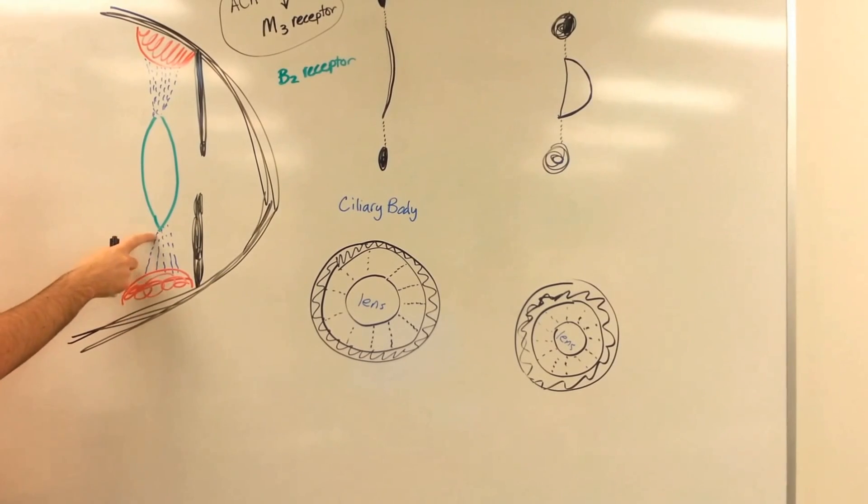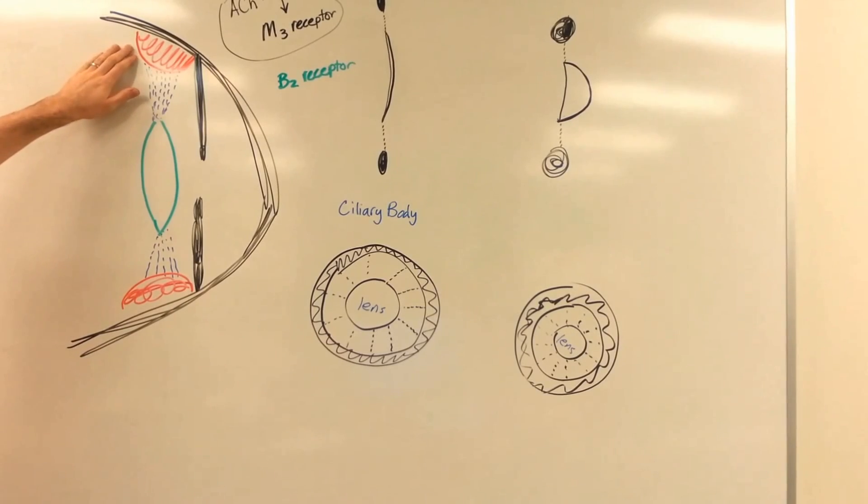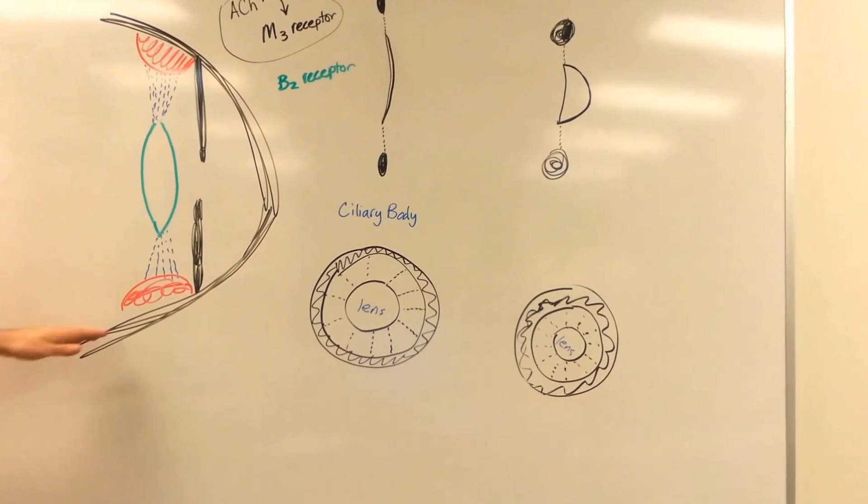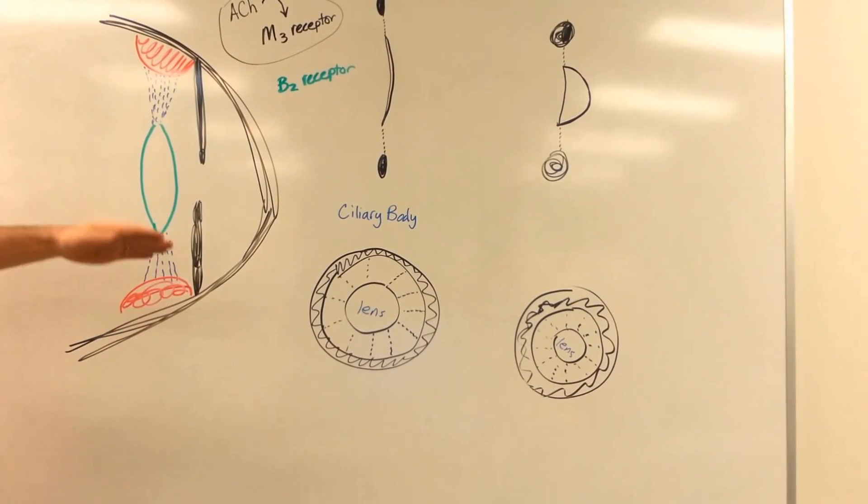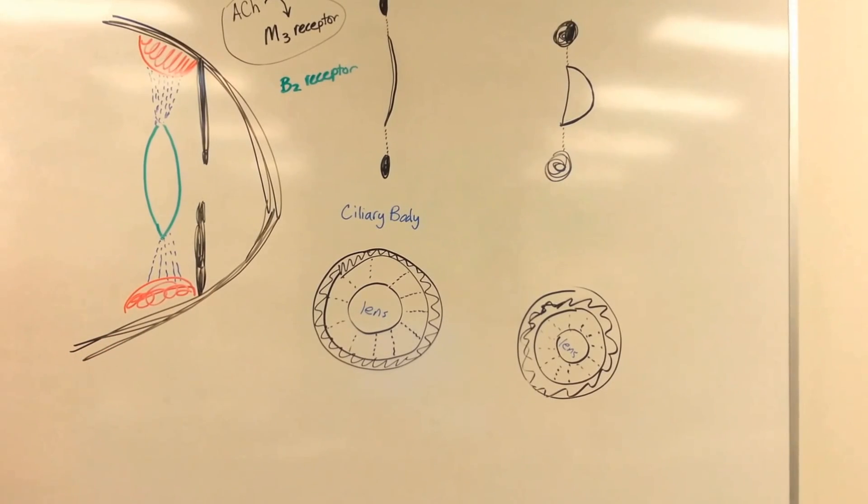And we've got the suspensory ligaments called zonules, and then the ciliary body, which is going to be a muscle on both sides. Since I can only draw in 2D, this is actually going to be a ciliary muscle that's going to encircle the whole lens. And that's going to be an important subject to remember.